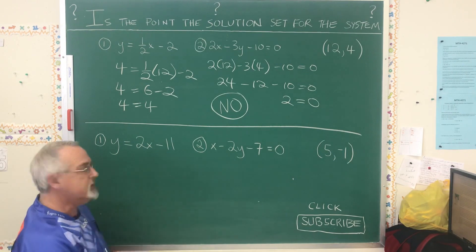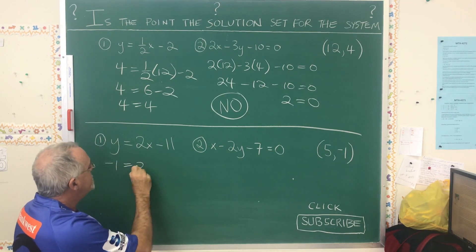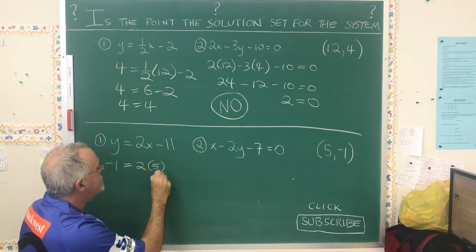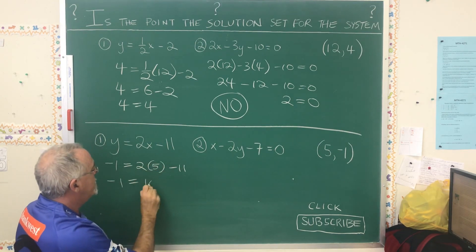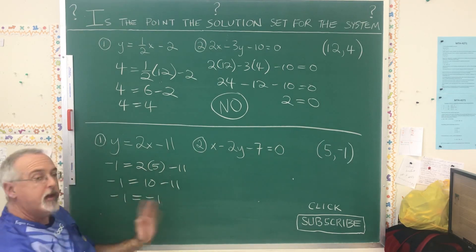Is the point (5, -1) the solution set? We replace y with negative 1, replace x with 5, and we simplify. We get negative 1 equals negative 1. That verified.